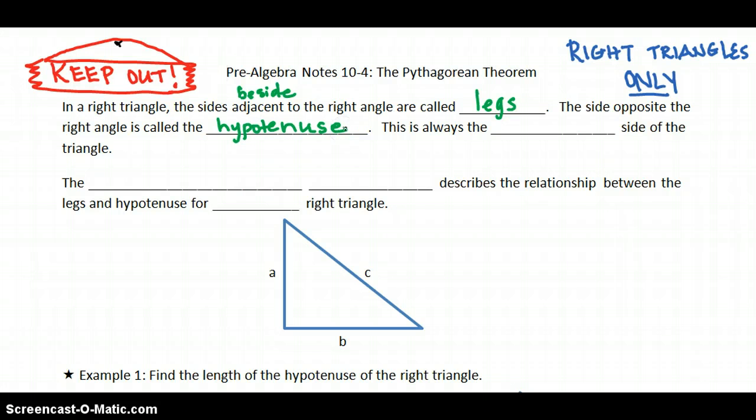The hypotenuse is the side across from the right angle. This is always going to be our longest side. In every right triangle, the hypotenuse is the longest side. Let's practice this word again, the Pythagorean theorem describes the relationship between the legs of a right triangle and the hypotenuse, and this is for every right triangle. Right triangles only.